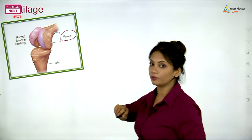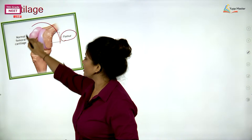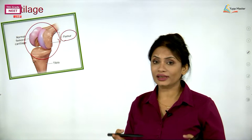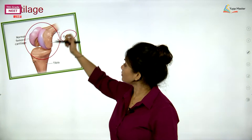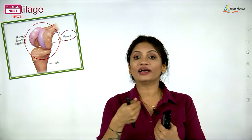The femur is the thigh bone. At the ends of long bones there is cartilage. Why? Because it is a joint and joints require flexibility. Along with ligaments, there should be other structures providing flexibility. If only bone is connected to bone, there would be no lubrication and the joint could not move. So cartilage is there to prevent friction of bones.